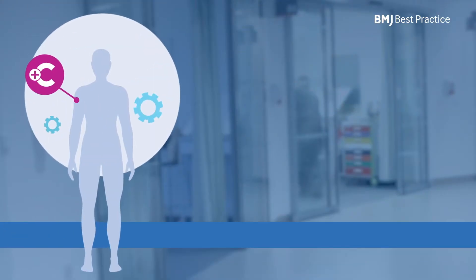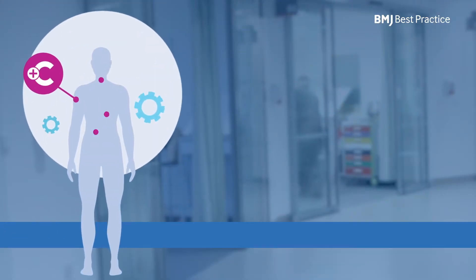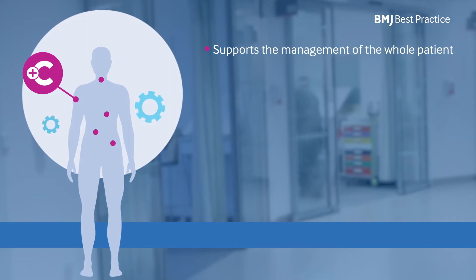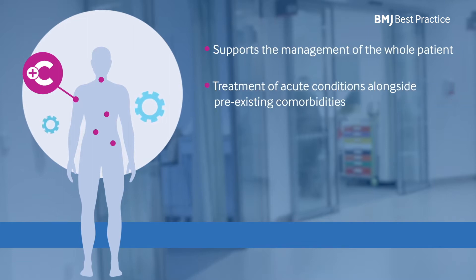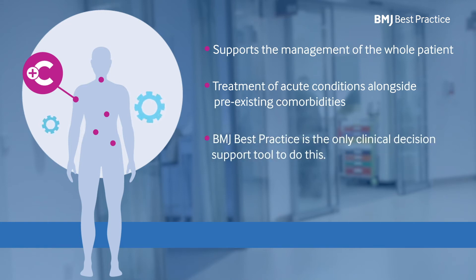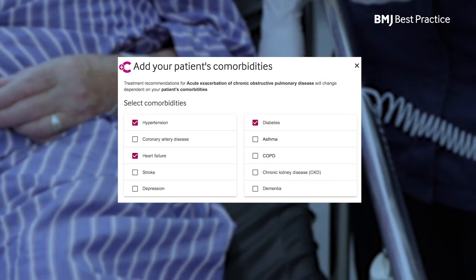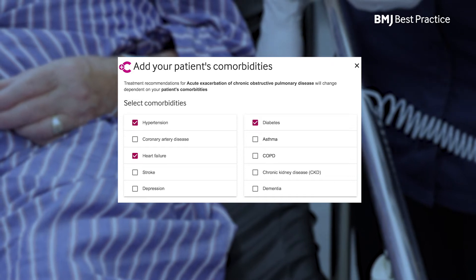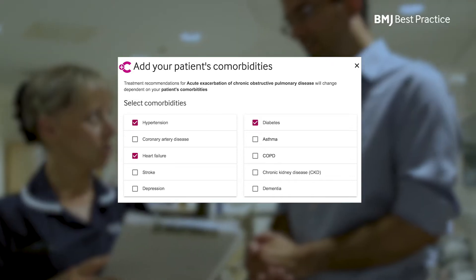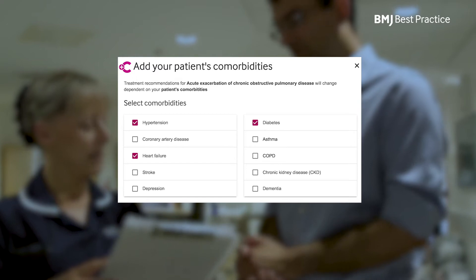The new BMJ Best Practice comorbidities tool supports the management of the whole patient by providing guidance on the treatment of acute conditions alongside pre-existing comorbidities. BMJ Best Practice is the only clinical decision support tool to do this. Treating the acute presentation alongside existing conditions enables healthcare professionals to quickly treat and stabilise patients with comorbidities.